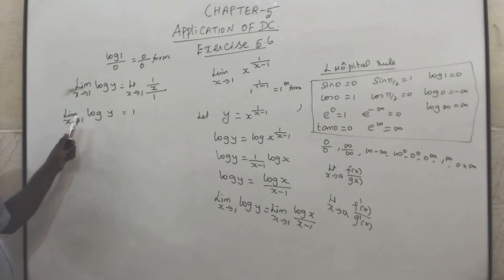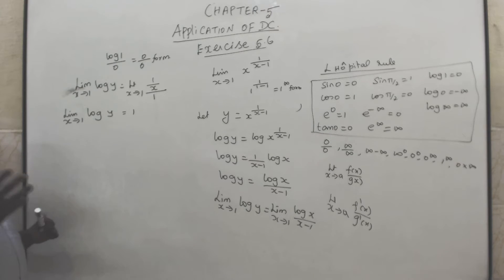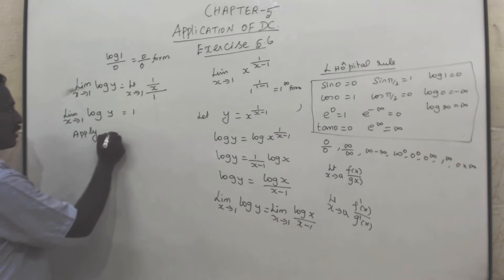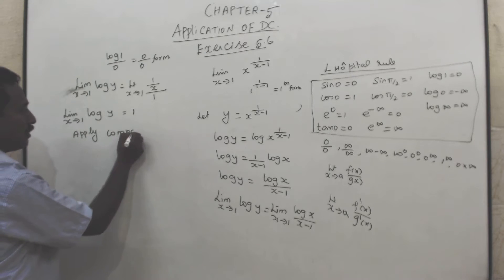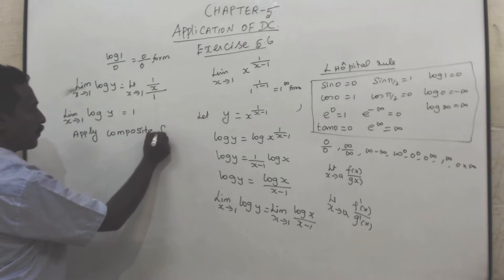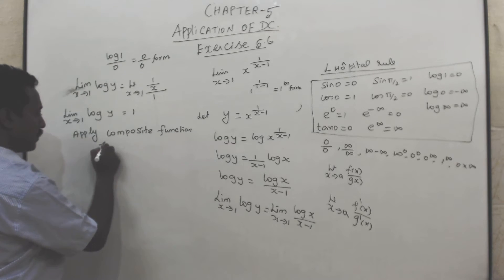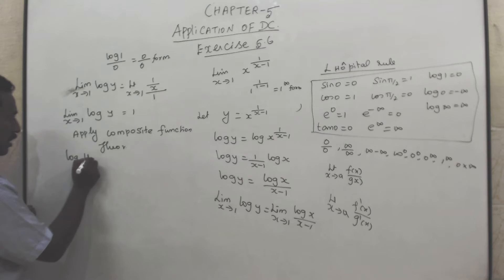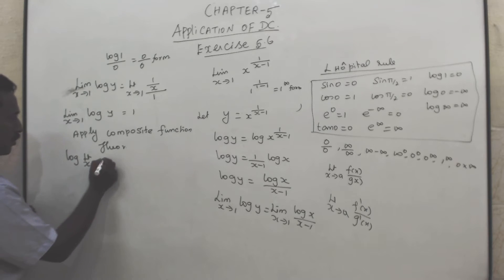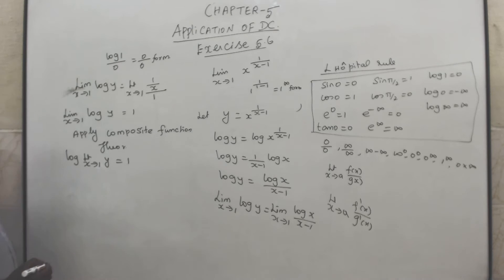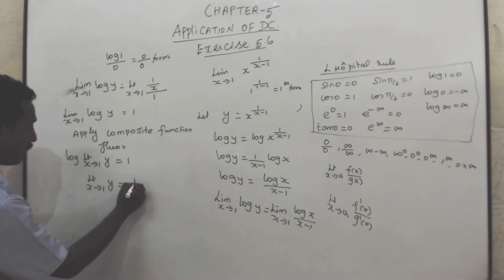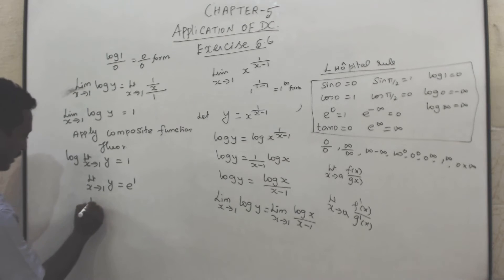Now apply the composite function theorem. Taking out the log: log of limit x tends to 1 of y equals 1. To eliminate this log, we raise e to both sides. So limit x tends to 1 of y equals e power 1, which is e.